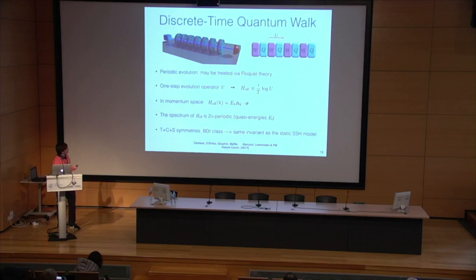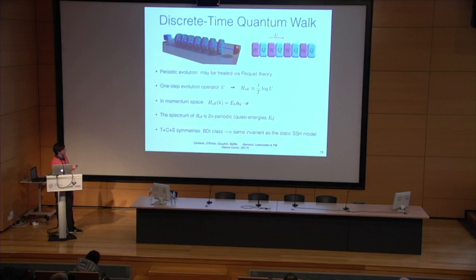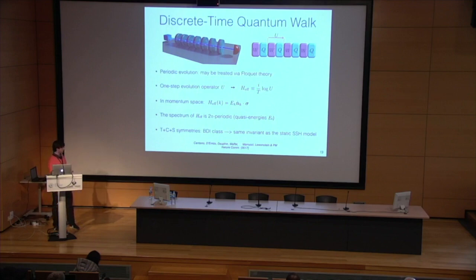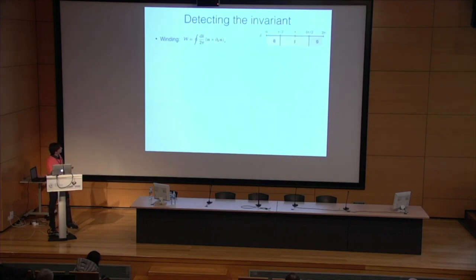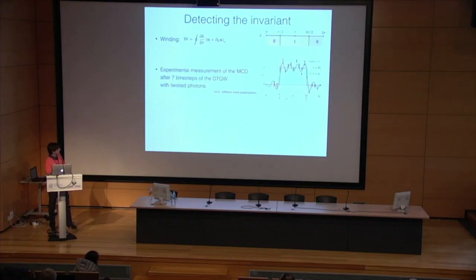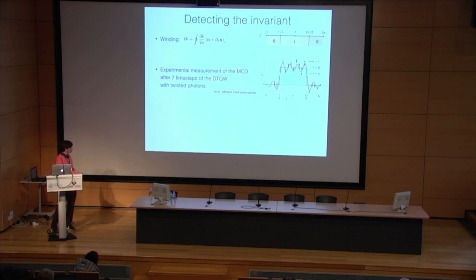This is a periodic evolution so it can be treated via Floquet theory. The unitary evolution operator is a single application of W and Q, representing a unitary evolution operator U whose logarithm gives an effective Hamiltonian H. In momentum space this is again a 2×2 matrix with the same symmetries as the SSH model, so it admits the same invariant. The spectrum is 2π periodic, so the quasi-energies are periodic. One can compute the winding as a function of delta — a parameter controlling the strength of the Q-plates — finding two phases with winding 0 and 1. The mean chiral displacement correctly reproduces the expected winding for different initial polarizations.